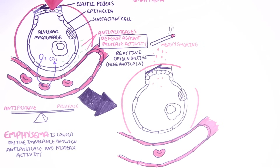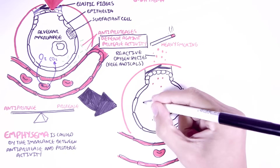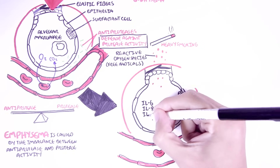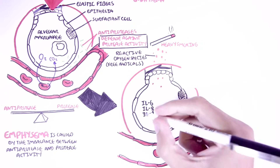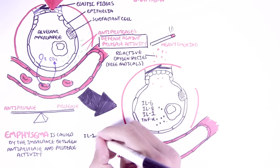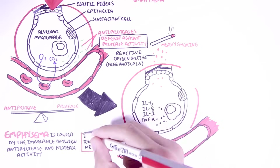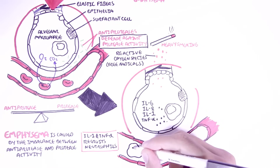Alveolar macrophages are normally found within the alveolus. Exposure to toxins from cigarettes will cause these macrophages to begin secreting many inflammatory mediators — inflammatory cytokines — mainly interleukin-6, interleukin-8, interleukin-1, TNF-alpha, and leukotriene B4. These chemicals will enhance the immune response; for example, interleukin-1 and TNF-alpha can recruit neutrophils into the area, a process known as chemotaxis.